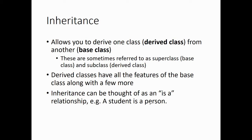When we're talking about inheritance, we can think of it as an is-a relationship. For example, a student is a person, and a King Charles Cavalier is a dog. That's the is-a relationship that we see in inheritance.